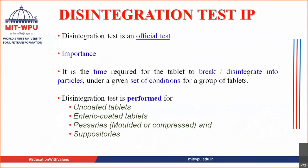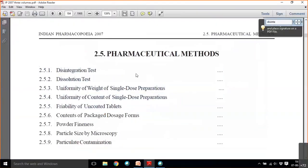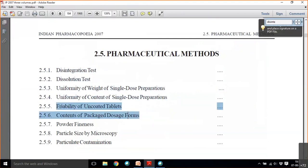What do we mean by official test and non-official test? The tests which are mentioned in IP are official tests. The tests which are not mentioned in IP are non-official tests. For example, in IP 2007, the disintegration test, dissolution test, uniformity of weight, uniformity of content, and friability test are all official tests.